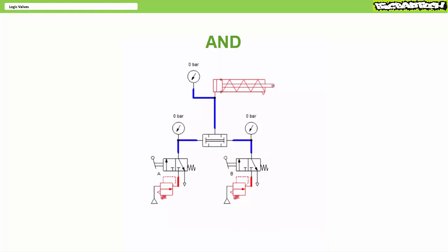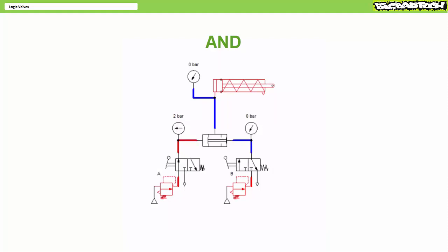Recall that an AND valve requires a pilot signal at both inputs A and B for there to be an output, and when both air pilots are present it selects the lowest of the two pressures. When neither A nor B receive an air pilot signal, the AND valve produces no output. When only A receives a signal, no output. When only B receives a signal, no output. Only when both A and B receive an air pilot signal does the AND valve produce output. You will note the AND valve selects the lowest of the two pressures, notably A at 2 bar.